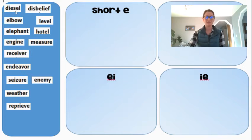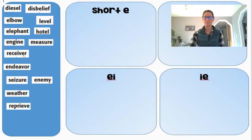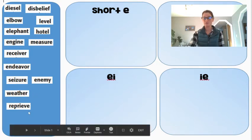So the first word here is diesel, disbelief, elbow, level, elephant, hotel, engine, measure, receiver, endeavor, seizure, enemy, weather, and reprieve.